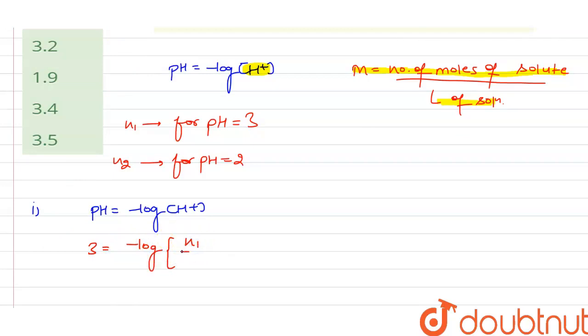Now if you want to check for pH equal to 2, then it will be minus log of H+ ion. For pH equal to 2, it will be minus log and the corresponding number of moles for H+ will be n2 and the volume V.